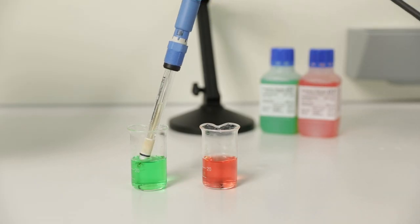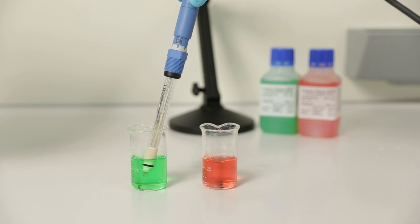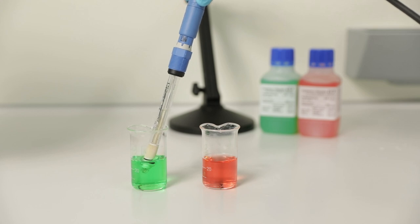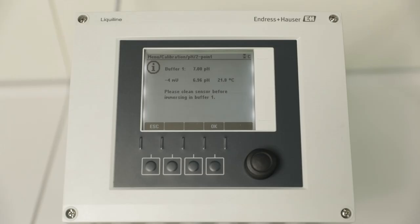Put the sensor in the first buffer solution requested from the CM44, by default pH 7. Wait around one minute to let the sensor settle. Confirm with OK.